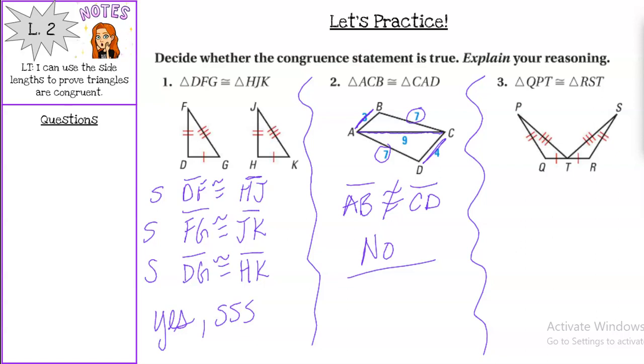You should have said yes because of side-side-side. We have side QT is congruent to RT, we have PQ is congruent to SR, and we have TP congruent to TS. Three congruent sides means we can say the triangles are congruent.